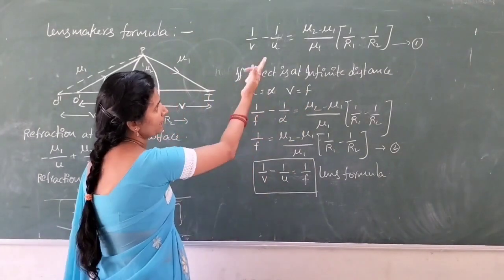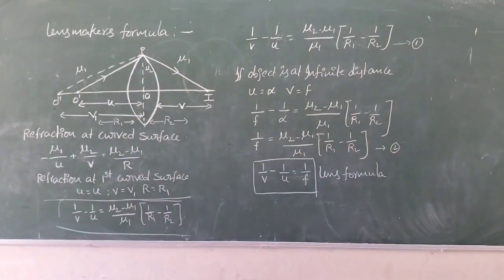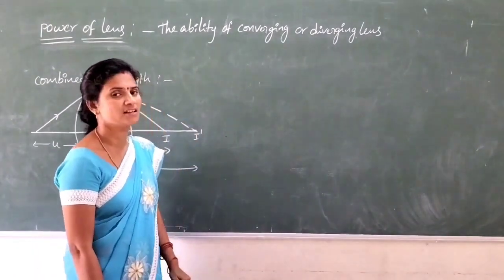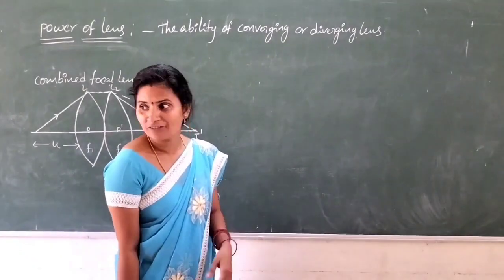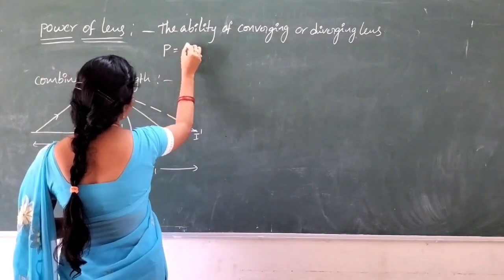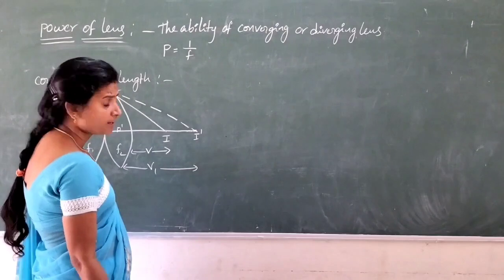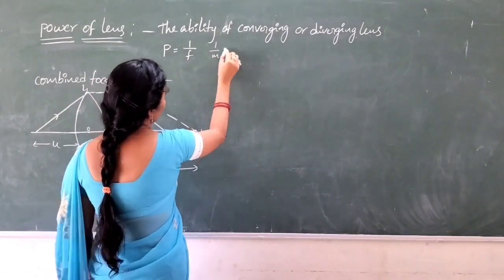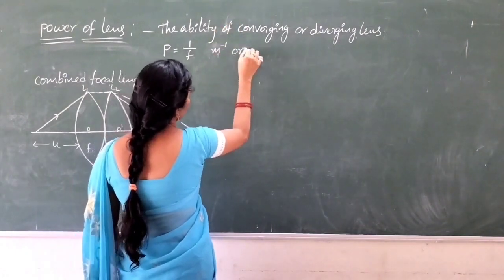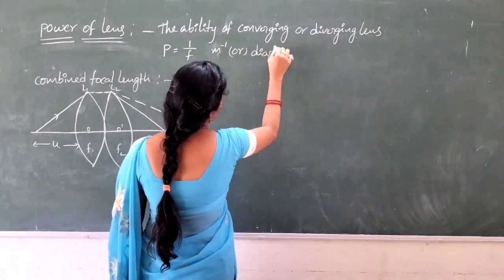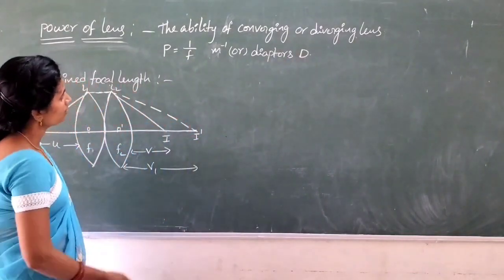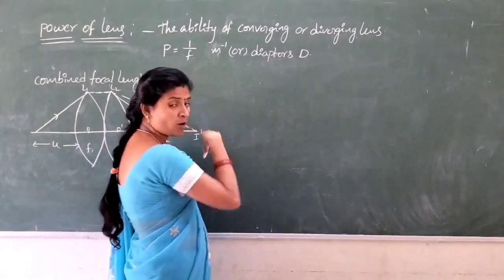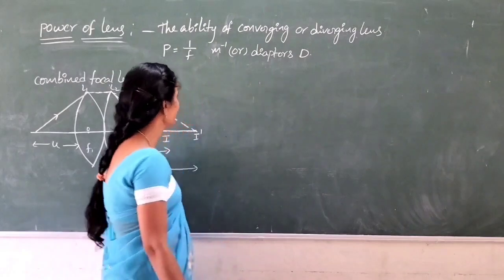The power of a lens is the ability of a lens to converge or diverge light. The definition of power of a lens is the reciprocal of the focal length: P = 1/F. Focal length is measured in meters, so the unit of power is meter inverse or diopters, represented by the letter capital D.